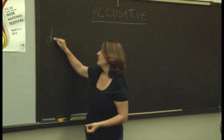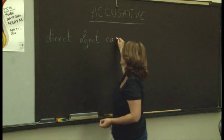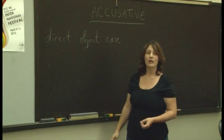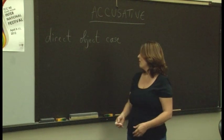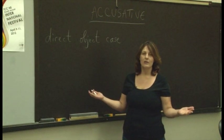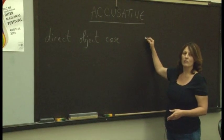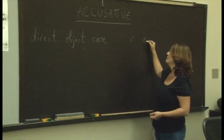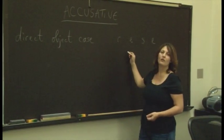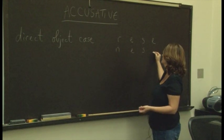What do you remember about the accusative from what we did last semester? The accusative is the direct object case. You remember that, hopefully, so we use it for the direct object of the sentence. And the only thing that happens is the masculine changes, so all the endings that we used to know, that we learned for the nominative, for the subject case, der, die, das, die, they all stay the same except for the masculine. It becomes den, den, die, das, die.